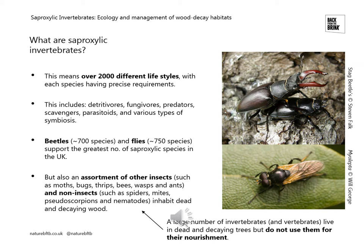The vast majority of saproxylic invertebrates within the UK are either beetles or flies, but there are an assortment of other insects as well that are considered saproxylic — things like moths, bugs, thrips, bees, wasps, and ants. There are also some non-insects such as spiders, mites, pseudoscorpions, and nematodes.